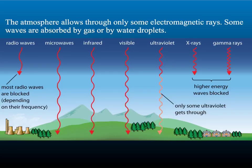Only certain frequencies of electromagnetic waves can pass through our atmosphere. These are the microwaves, the infrared, the visible and only some of the ultraviolet. Radio waves are blocked depending on their frequency, and the high energy waves like x-rays and gamma rays are blocked as well.